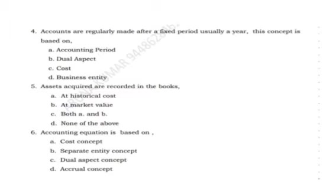Next: assets acquired are recorded in the books at — historical cost, at market value, both a and b, or none of the above? The answer is both historical cost as well as market cost.